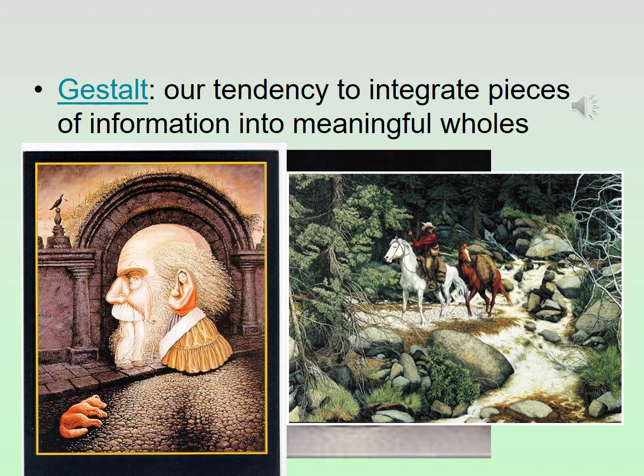Whenever we perceive something, at first we take in the whole picture — it's like a defense mechanism. It warns us if there'd be any danger. So we take in the big picture first and then we start to break down details, and this is known as gestalt. If you look at the picture on the right, at first the horses and the man in the forest scene jump out at you, but after you look closer, your mind will break down the details in the background and you'll start to see face images throughout the picture.